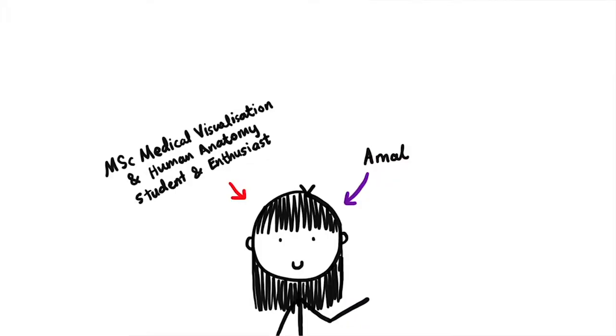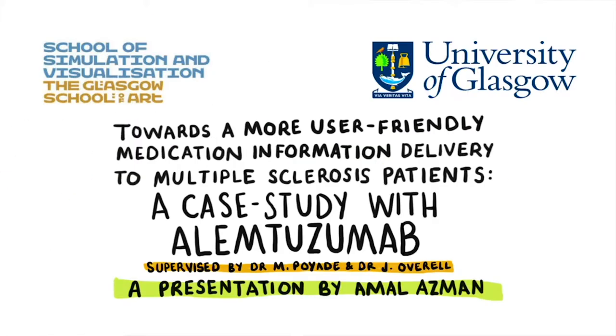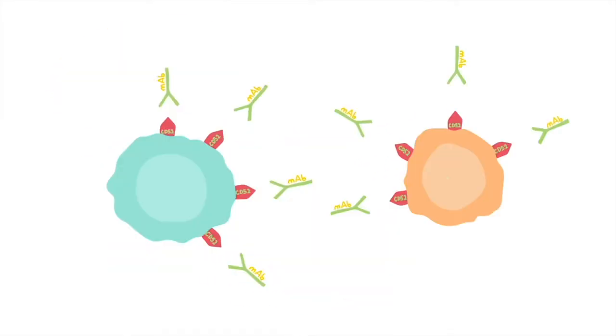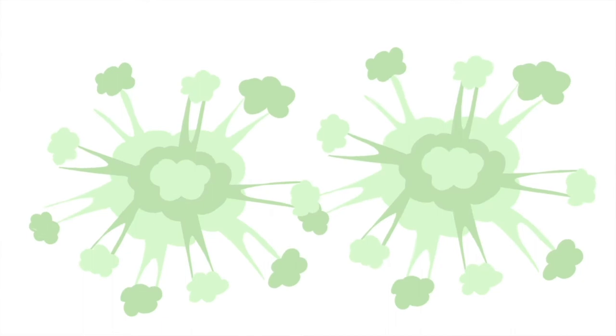In Stage 3, students have to carry out a self-directed project under the dual expertise of two supervisors. Normally this project aims at mixing the knowledge acquired from the two previous stages — so technological knowledge, but as well human anatomy knowledge, or more generally biomedical and life science knowledge.